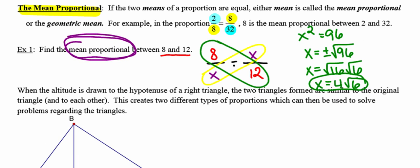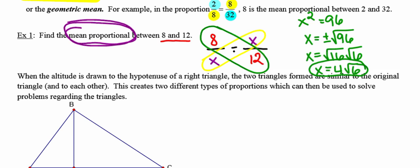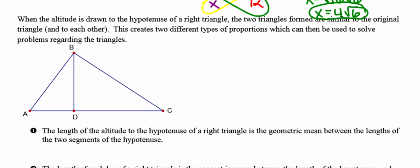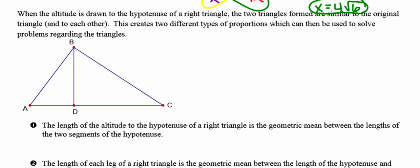Alright, so there's a summary of mean proportion. Let's go ahead and see how we can use this to solve some problems. Important idea to remember is that when the altitude is drawn to the hypotenuse in a right triangle, it forms two triangles that are both similar to the original and to each other.